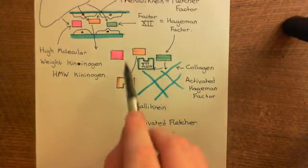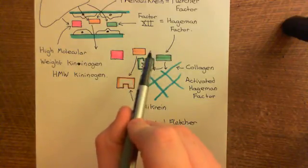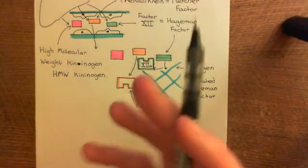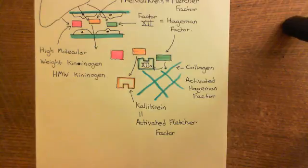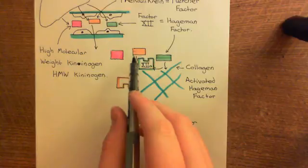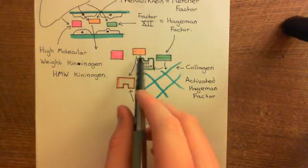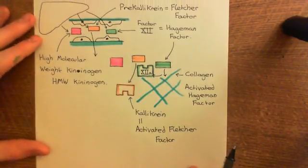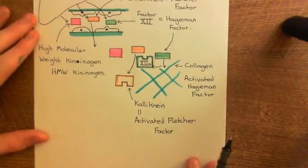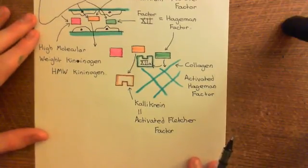This, of course, sets off the entire intrinsic coagulation cascade — there's a separate video on that. But another one of its actions is that factor XIIa is going to act on the pre-kallikrein, also known as Fletcher factor, which we brought in from the blood, and convert it into kallikrein, or activated Fletcher factor.